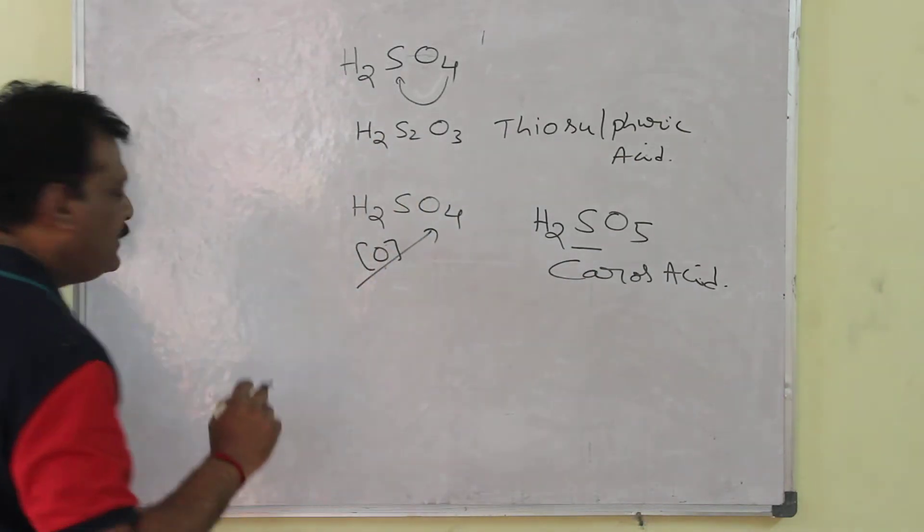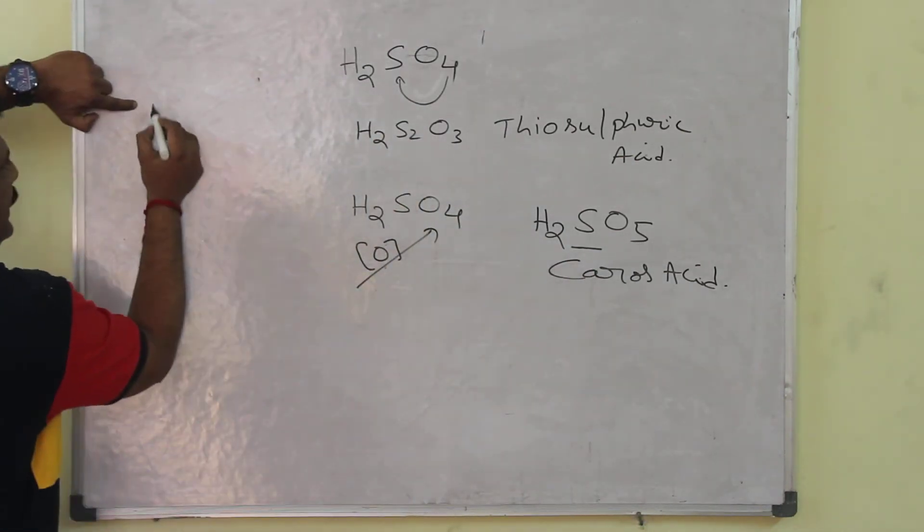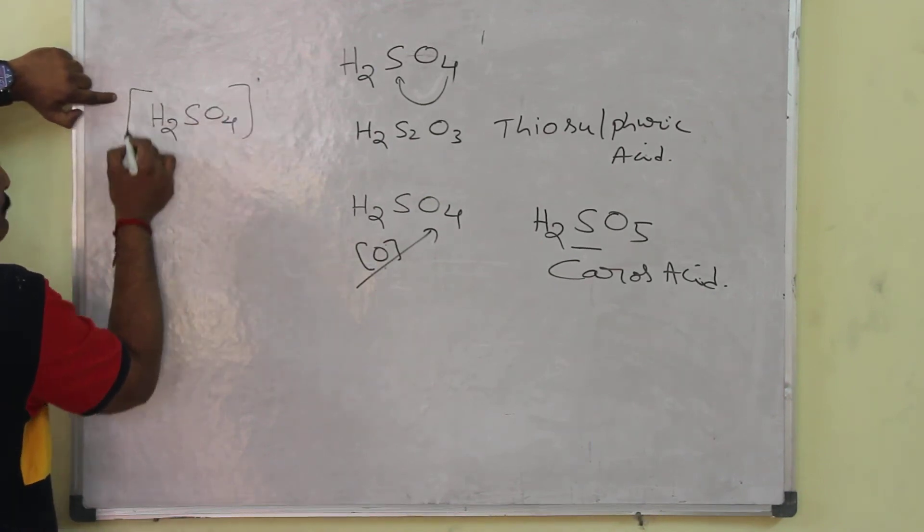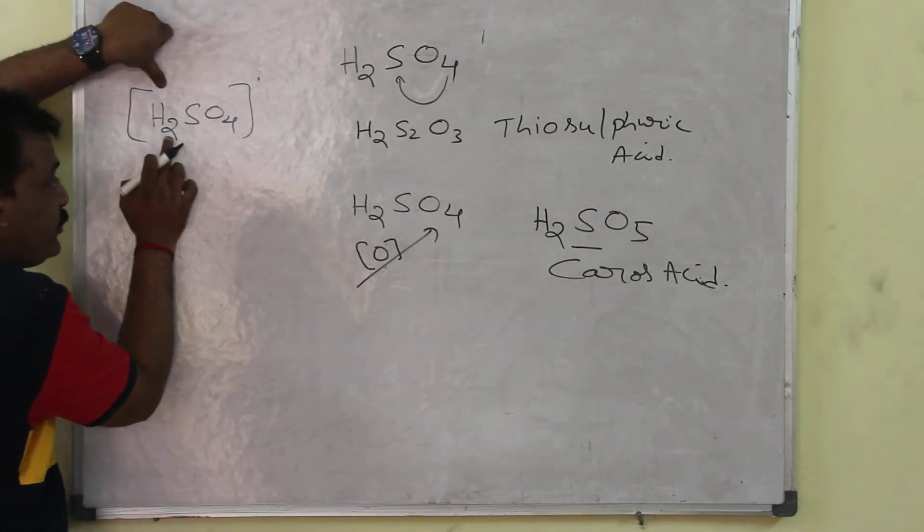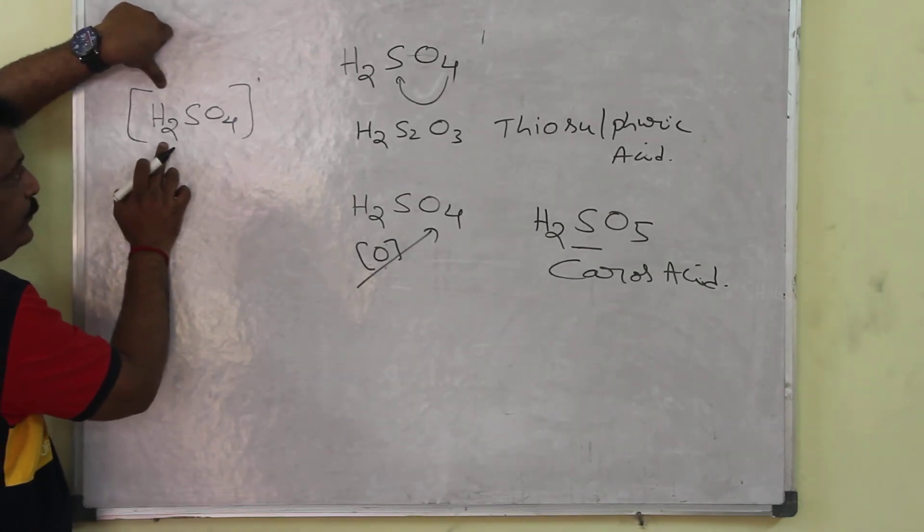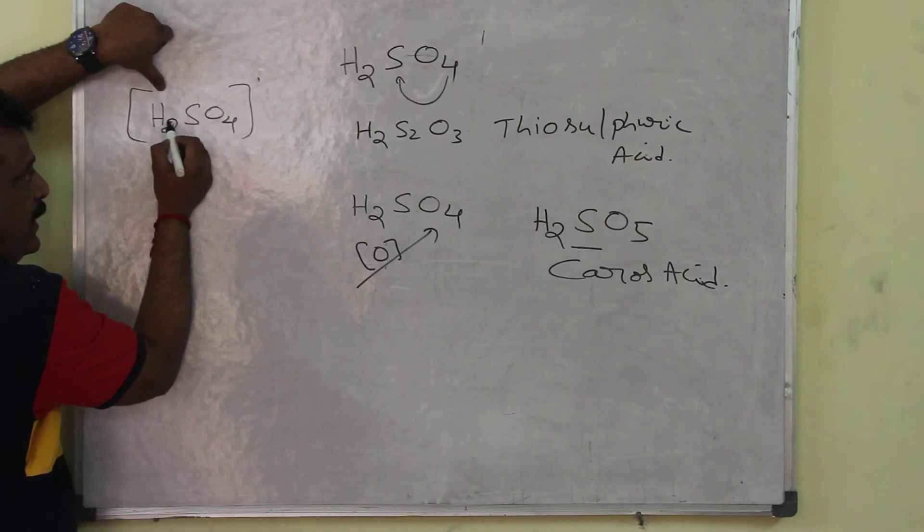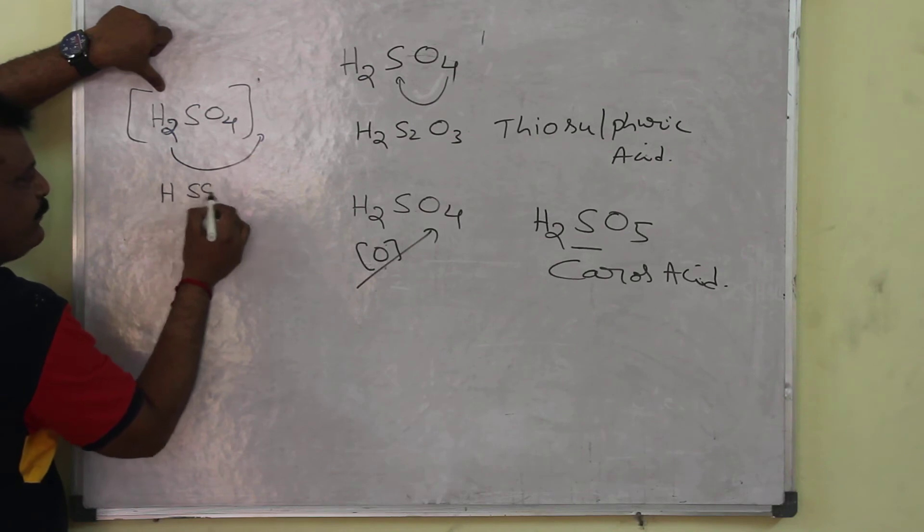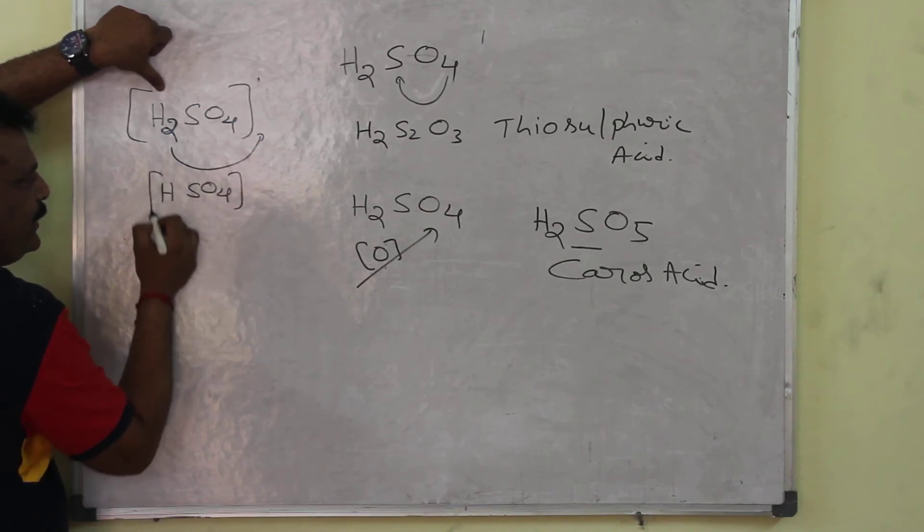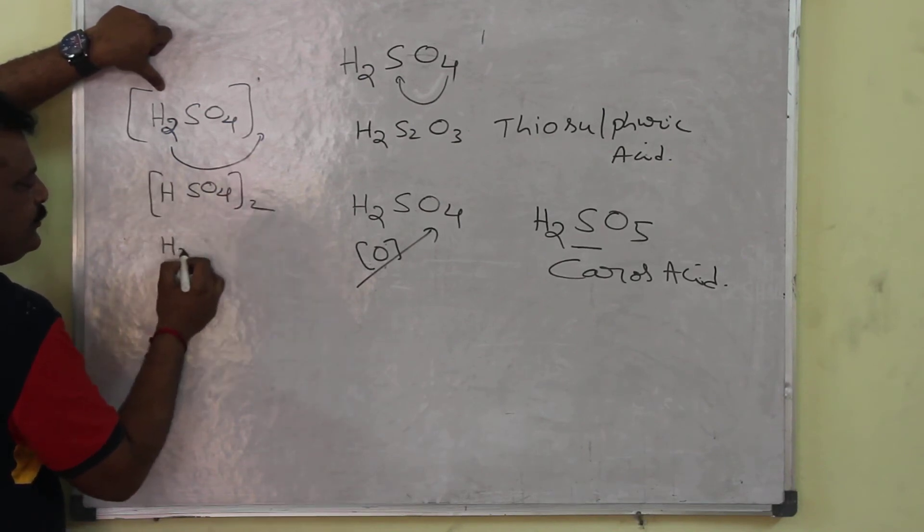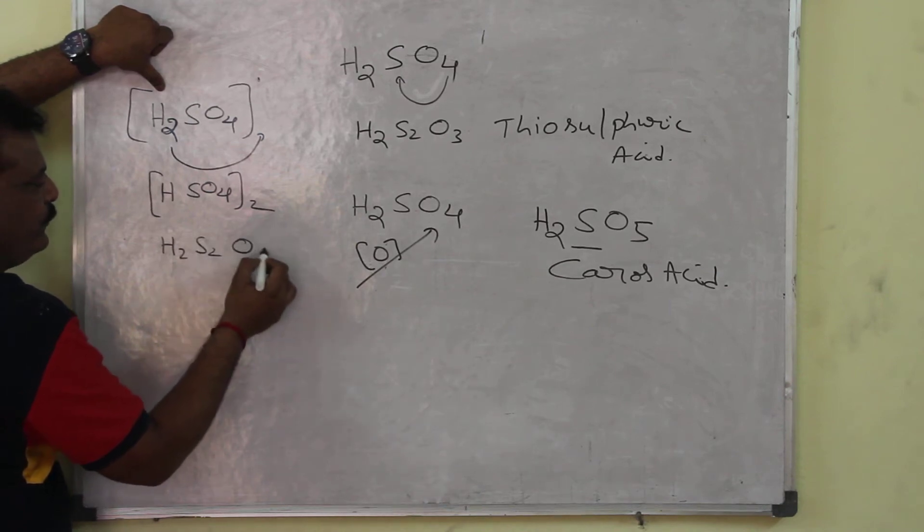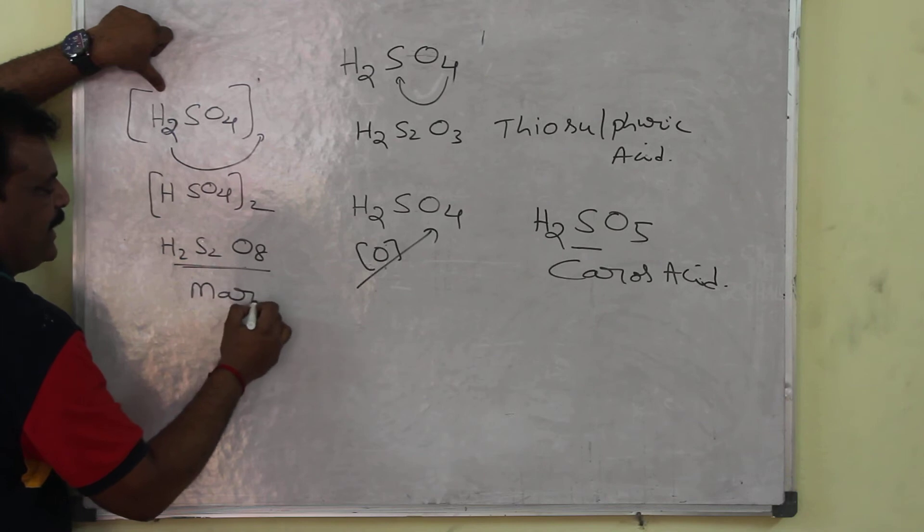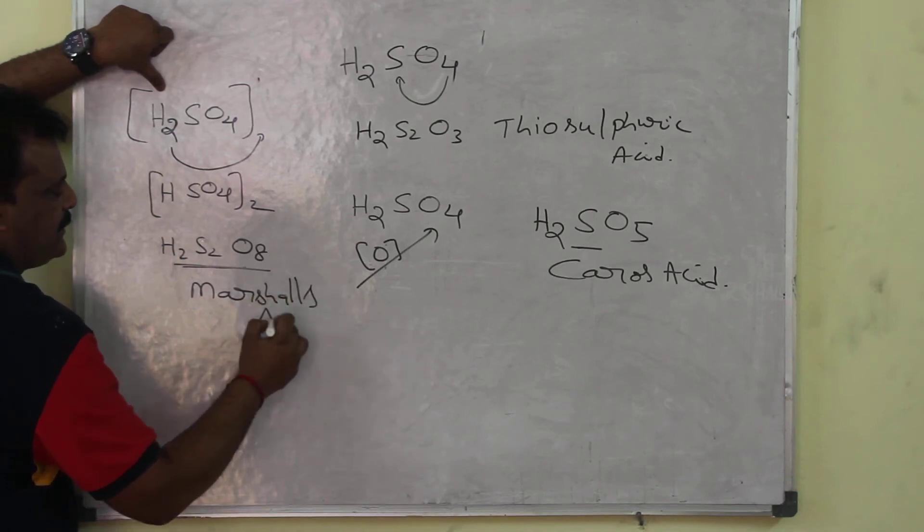Now, third one. Again, sulfuric acid H2SO4. Multiply by two. This two, H2SO4. One second, I am telling you. This two. Take it two times. This is Marshall's acid.